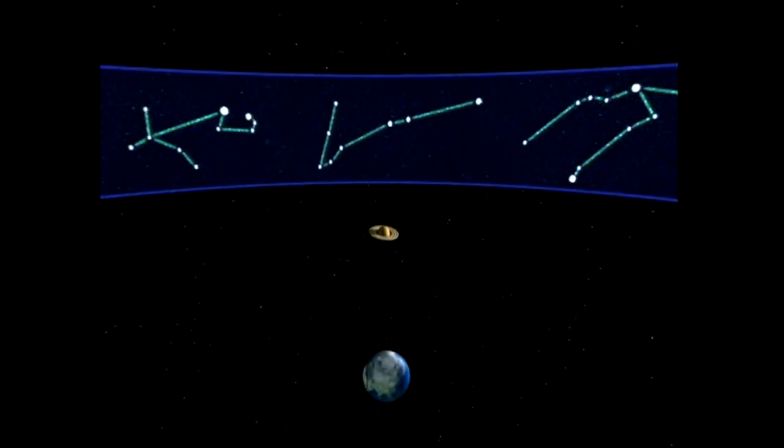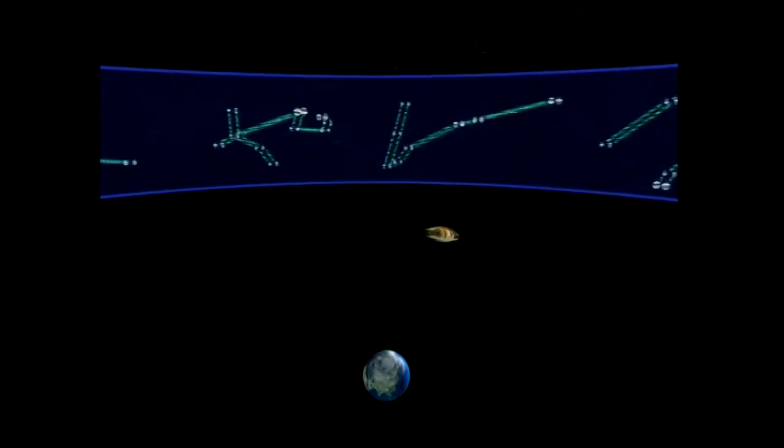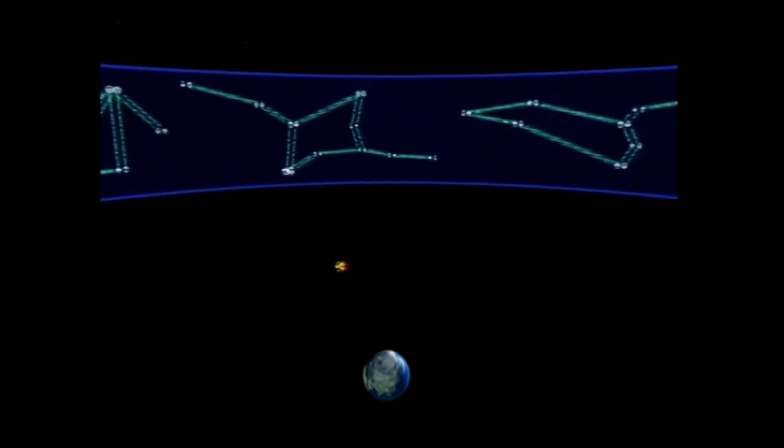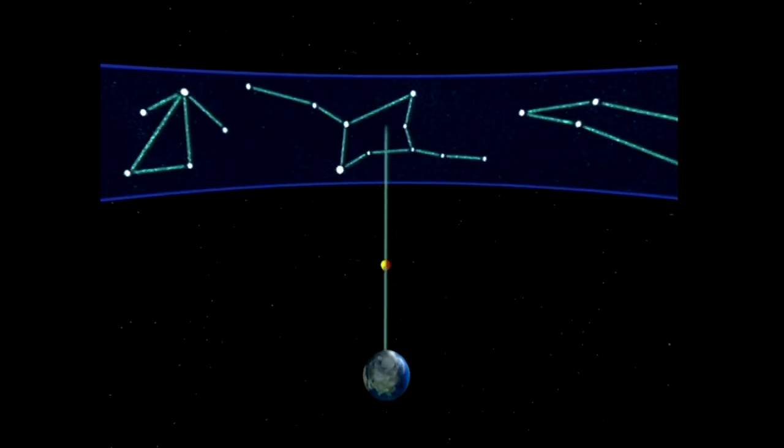At night, you can locate the planets using the constellations of the Zodiac. Saturn sometimes appears in line with the constellation of Pisces, and Mars in line with Virgo.